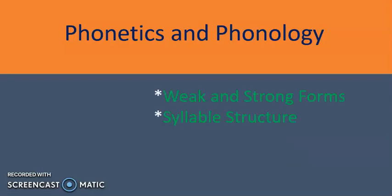You should know weak and strong forms. Helping words — mostly prepositions, articles, conjunctions, and auxiliaries — are weak forms. Other words such as verbs, nouns, adjectives, and adverbs are strong forms. You should also know syllable structure — what is a consonant and what is a vowel.